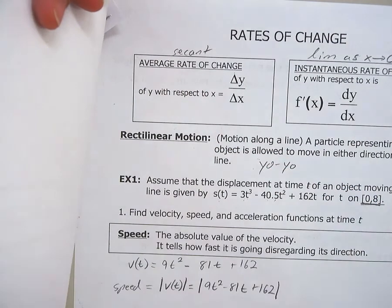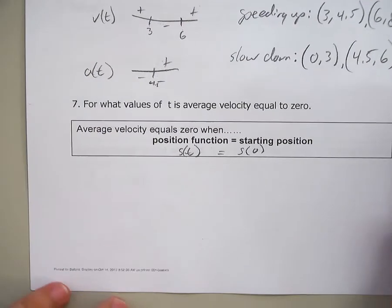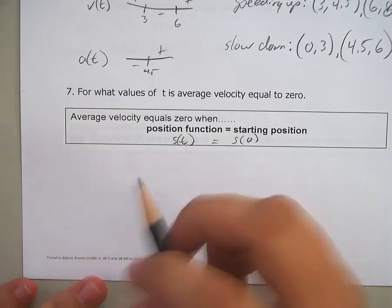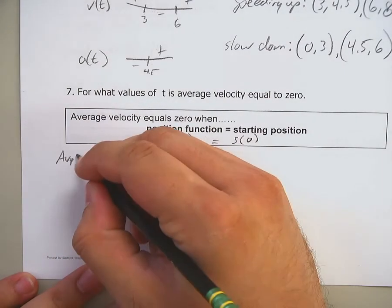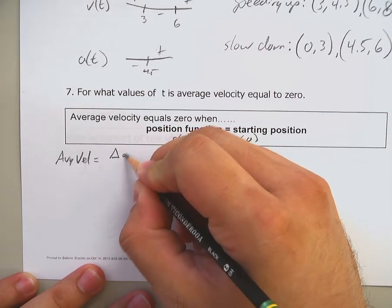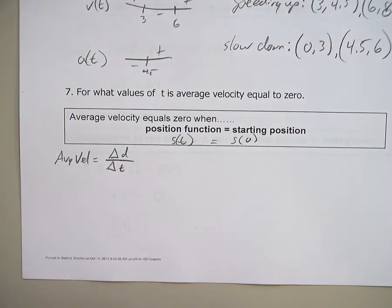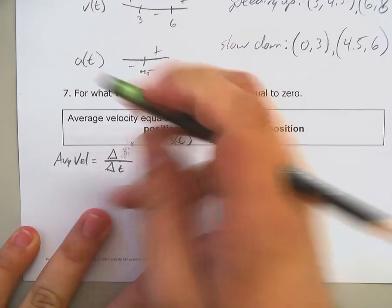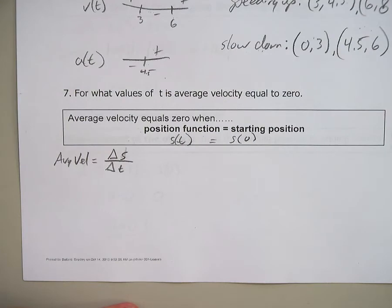In this case, change in distance over change in time. You've known that velocity is distance over time, right? Now we're getting into some actual physics stuff. So your average velocity is equal to the change in distance over the change in time. Now the change in distance, since my position function is s, it's going to be the change in s over the change in t.